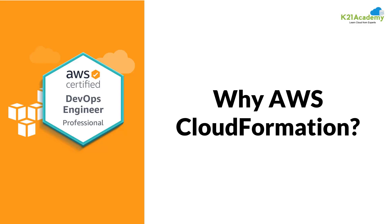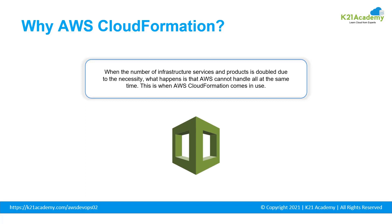Now let's see why we need AWS CloudFormation. When the number of infrastructure services and products double due to necessity, AWS can't handle all of them at the same time. This is when AWS CloudFormation comes into picture — it is infrastructure as code, which can create a seamless clone of server configuration at any time. With CloudFormation, configuration changes can be made dynamically and embedded into the existing environment without obstruction. Without it, developers spend their time building infrastructure instead of focusing on application development, and rebuilding or redeploying any environment is a hectic task.